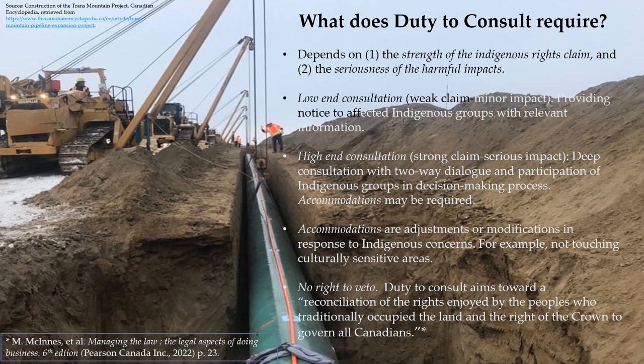A good example of the duty to consult and the difficulties that arise is the Trans Mountain Pipeline project proposed by Kinder Morgan. Kinder Morgan needed the approval and permission of the federal government to proceed, and the federal government delegated the duty to consult with Indigenous groups to Kinder Morgan. After Kinder Morgan finished its consultation process, the federal cabinet approved the Trans Mountain project. However, certain Indigenous groups challenged that approval in court. In the decision of Tsleil-Waututh Nation and the Attorney General of Canada, the Federal Court of Appeal quashed the federal government's approval on the basis that the duty to consult had not been satisfied. Specifically, the court said the federal government had been closed-minded and unwilling to engage in meaningful two-way dialogue with Indigenous groups.